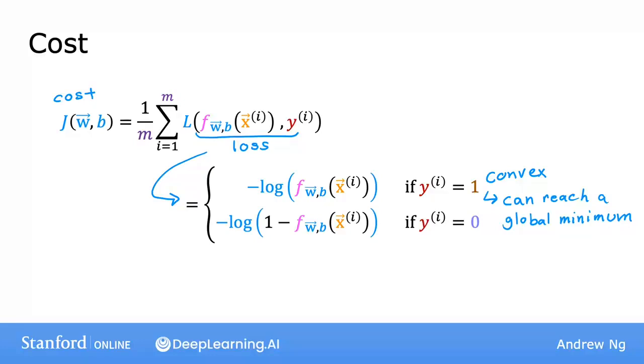You may remember that the cost function is a function of the entire training set and is therefore the average or 1 over m times the sum of the loss function on the individual training examples. So the cost on a certain set of parameters w and b is equal to 1 over m times the sum over all the training examples of the loss on the training examples. And if you can find the value of the parameters w and b that minimizes this, then you'd have a pretty good set of values for the parameters w and b for logistic regression.